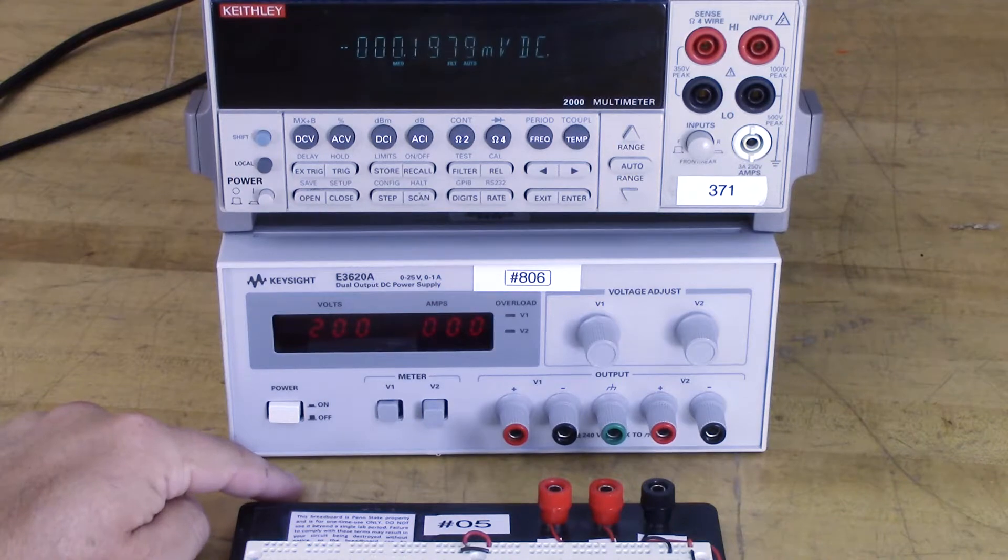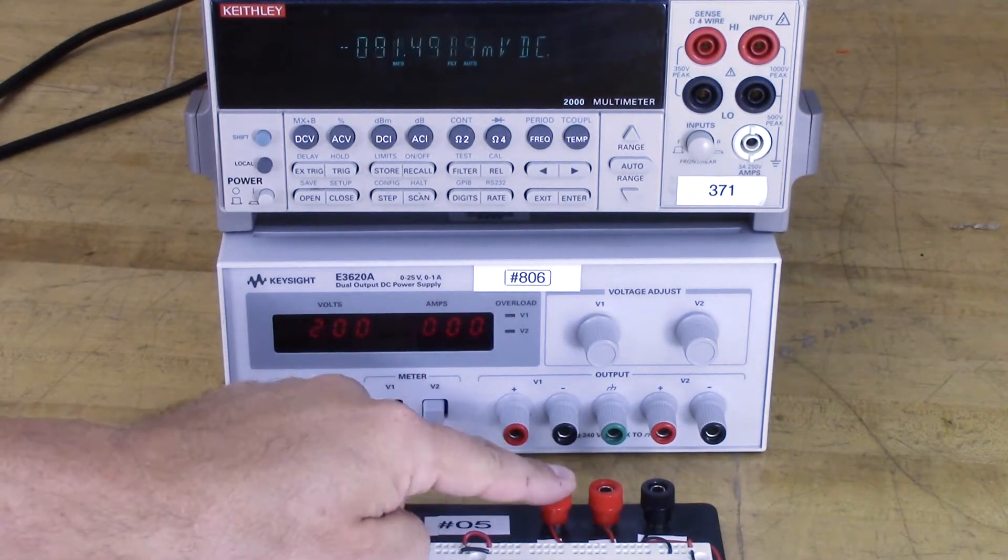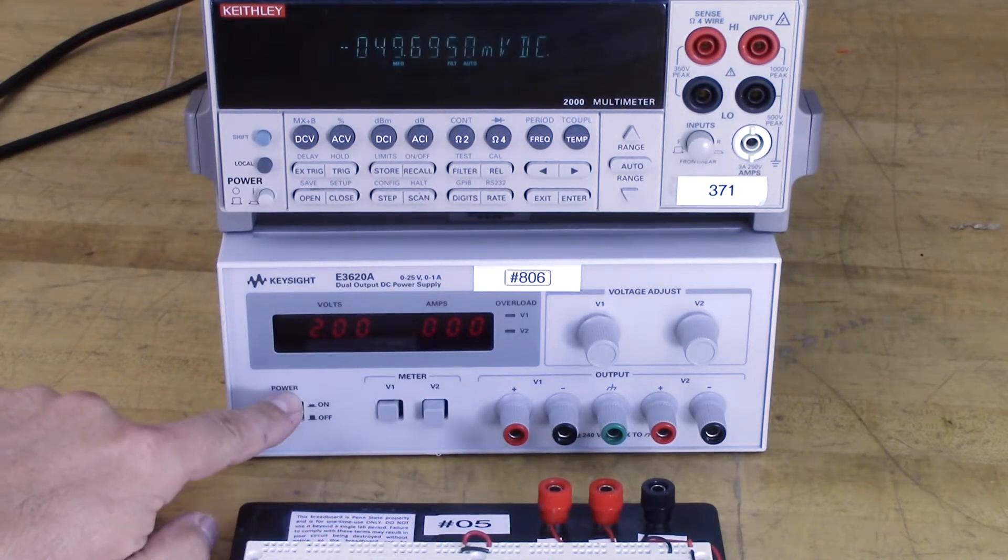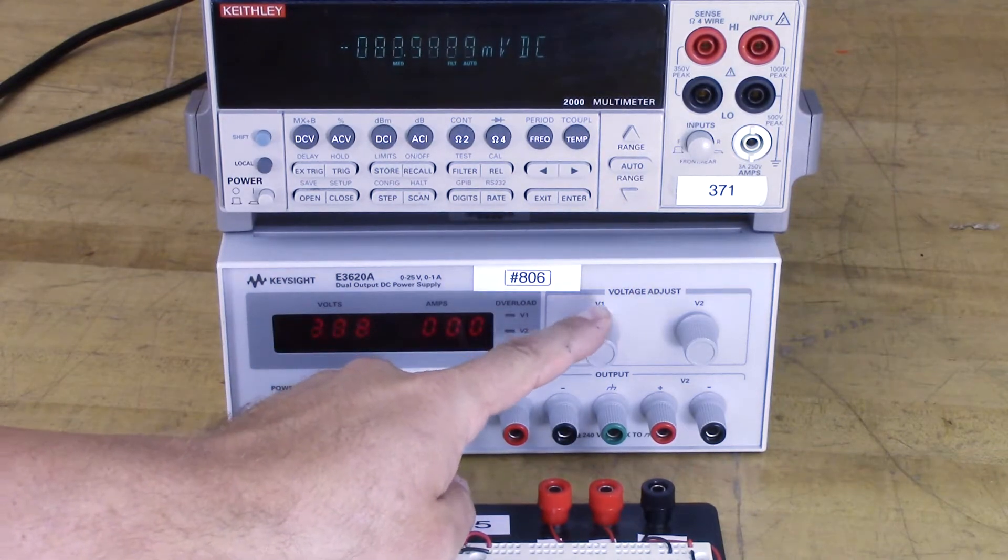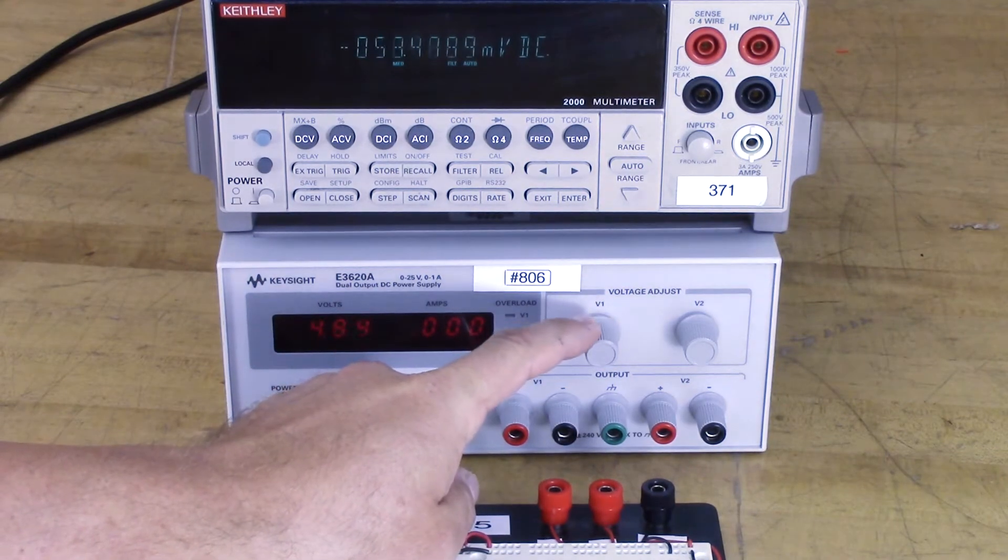So always before you connect the power to your breadboard, make sure you turn it on and make sure you select the voltage you want. But in this case, let's just turn it up to 5 volts.